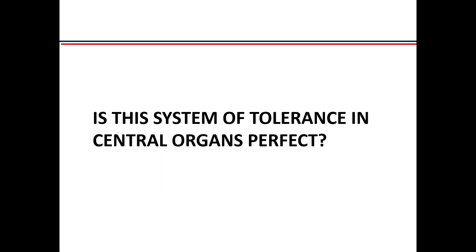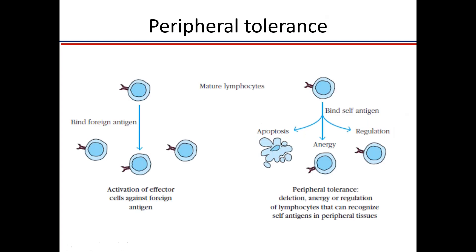Is the system of tolerance in central organs perfect? No. Some autoreactive T cells and B cells still enter the periphery. All of us have a small proportion of autoreactive T cells, and with sensitive methods, most of us would show some level of autoantibodies. In the periphery, normally when a T cell encounters a foreign antigen it gets activated, but self-antigen is presented in a non-inflammatory milieu without co-stimulatory molecules, so the T cell generated tends to be more regulatory.